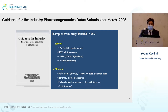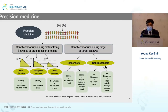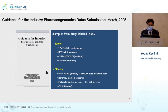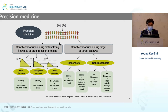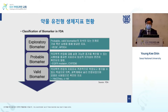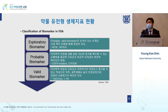Looking at the origin, there was a guidance for industry published in 2005 by the US FDA. Safety-related pharmacogenomics biomarkers and efficacy-related biomarkers are described there. Efficacy is related to responder and non-responder classification, while safety-related ones cover overexposure or underexposure due to drug metabolizing enzyme or drug transport protein variability. The FDA classifies biomarkers into three types: valid, probable valid, and exploratory.